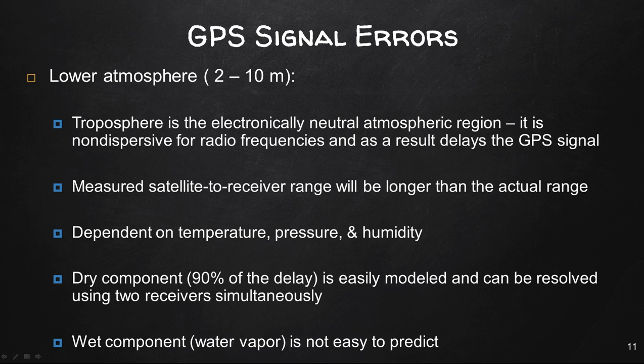The troposphere is the electronically neutral atmospheric region. It is non-dispersive for radio frequencies and as a result delays the GPS signal. Measured satellite to receiver ranges will be longer than the actual range. Dependent on temperature, pressure, and humidity, these all affect the air. The dry component, 90% of the delay, is easily modeled and can be resolved using two receivers simultaneously. The wet component, the water vapor, is not easy to predict.